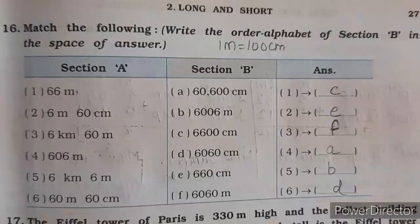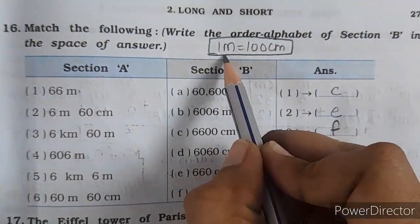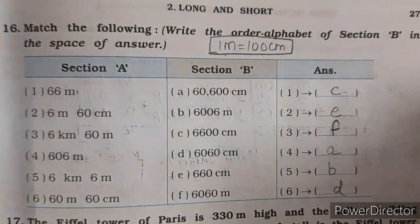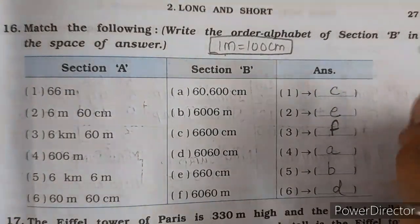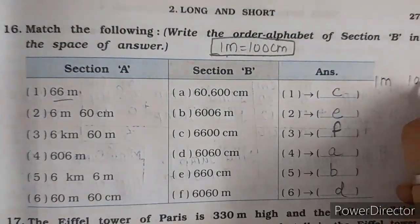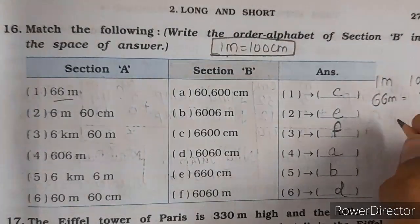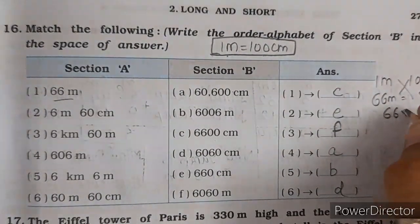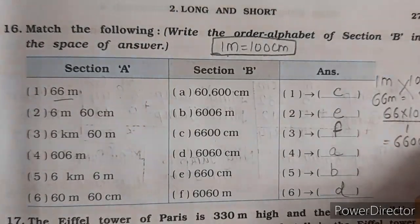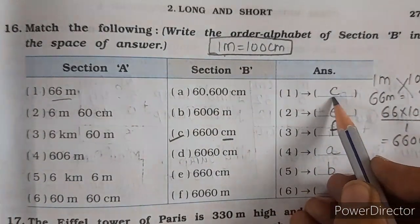Aapko samajh mein aaya na? Next, question number 16 — match karna hai. Ab aapko yeh baat dhyan rakhni hai ki 1 meter kitna centimeter hota hai — 100 centimeter hota hai. Yahan pe ek example karke bata raha hun, baaki ko aapko khud karna hai. So aapko kya find karna hai — 66 meter kitna centimeter hota hai? 1 meter equals 100 centimeter, to 66 meter kitna hoga? Cross multiplication — 66 into 100 divided by 1. Answer aega 6600 centimeter, yani ki option number C.